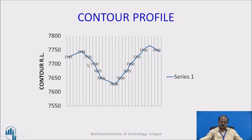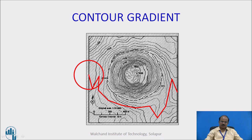So this is a classical profile which we can draw from a given contour map, which helps us in identifying how the ground surface varies along a given alignment.